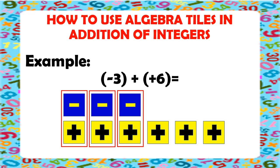Now, let's count how many tiles we have left. We have 1, 2, and 3. And we have 3 yellow tiles left, which means positive 3. Therefore, negative 3 plus positive 6 is equal to positive 3.